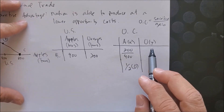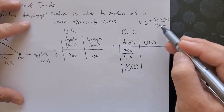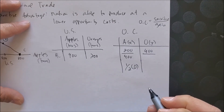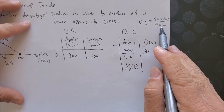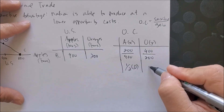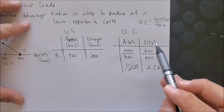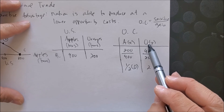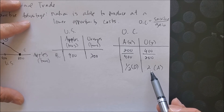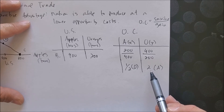Now for the orange category: if the U.S. focuses on oranges, it's going to sacrifice apples. Apples would be 400 on the numerator, and what it gains would be oranges at 200. So 400 over 200 gives us two apples. For every one orange the U.S. produces, it gives up producing two apples.